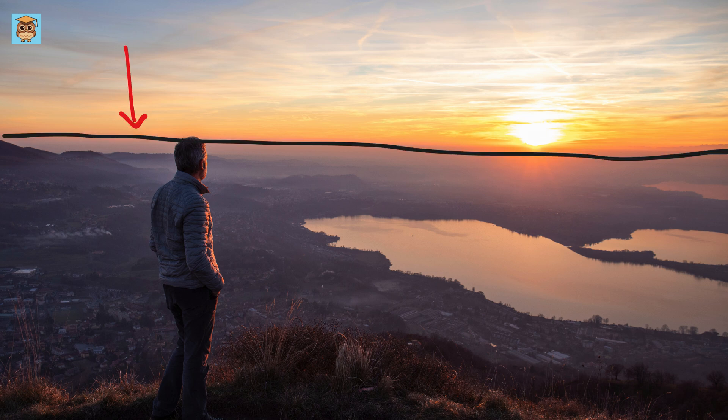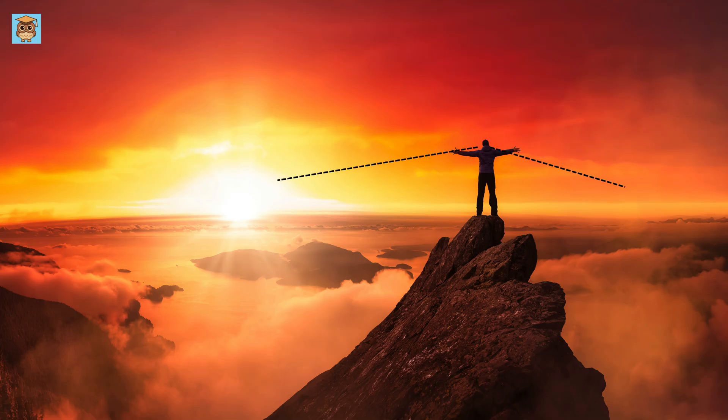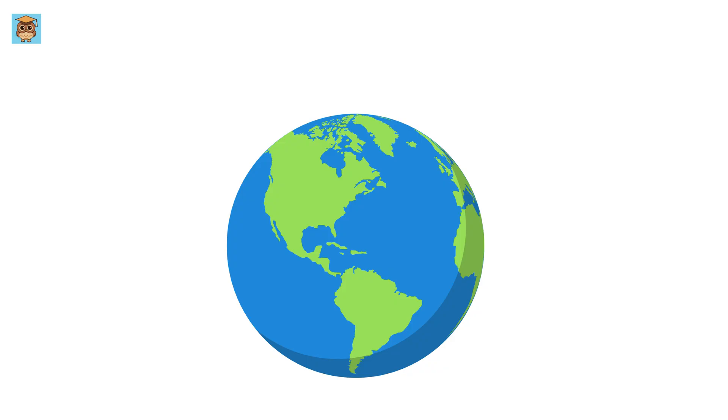The distance to this line depends on how high you are above the ground. The higher you go, the farther you can see. Imagine the Earth as a giant ball. If you were standing on the surface of this ball, your eyes would form a straight line pointing outward. This line eventually meets the curved surface of the ball, creating what we call the horizon.